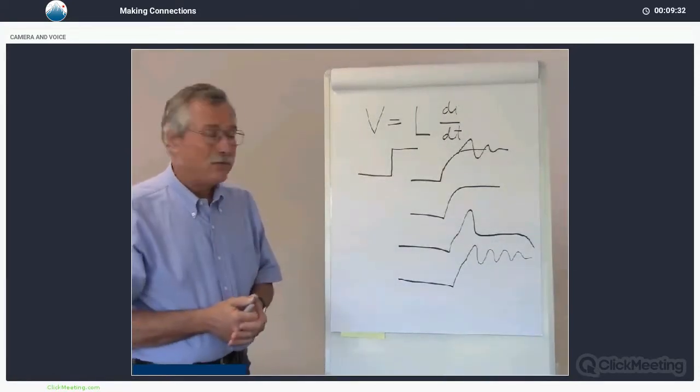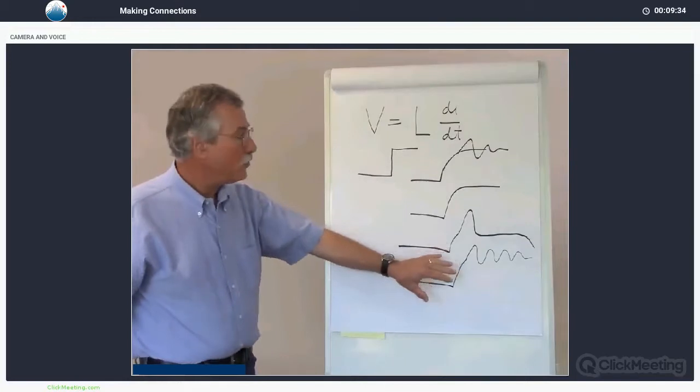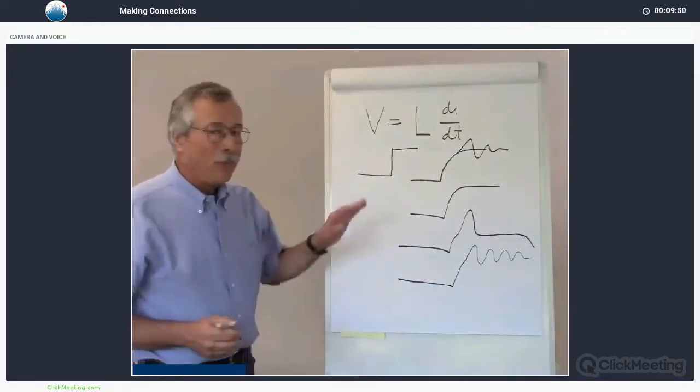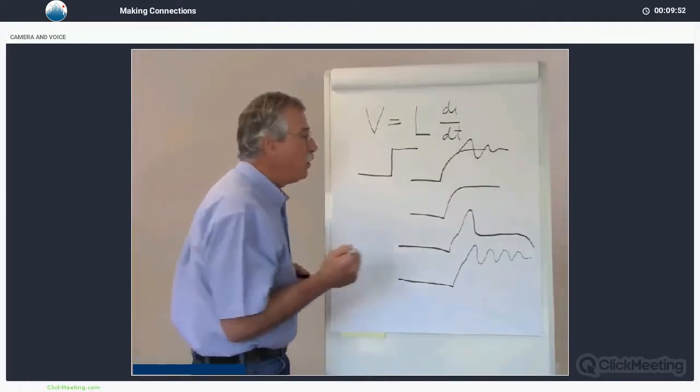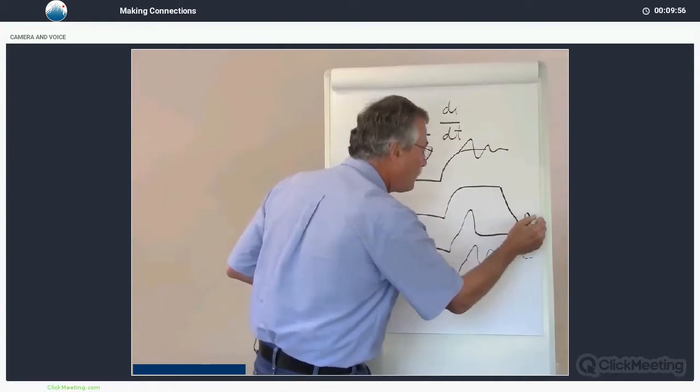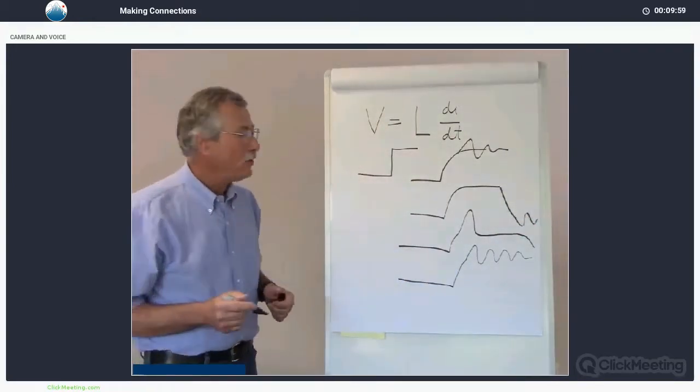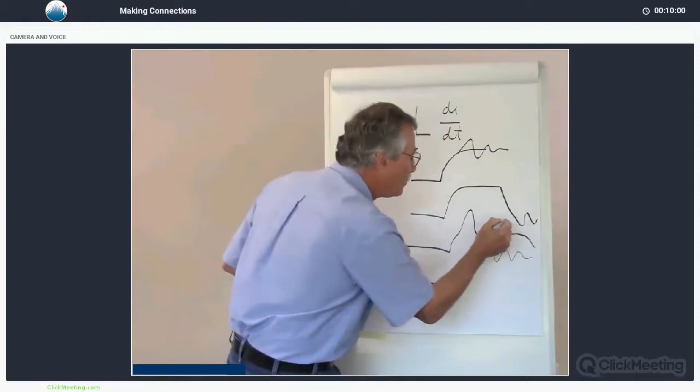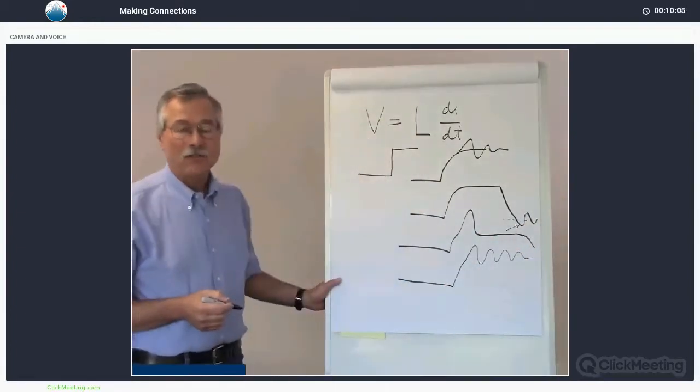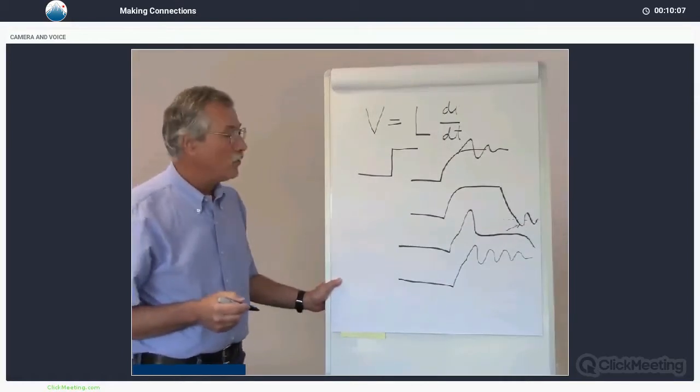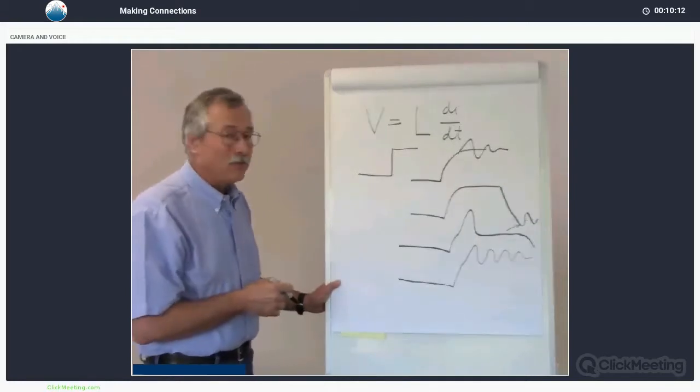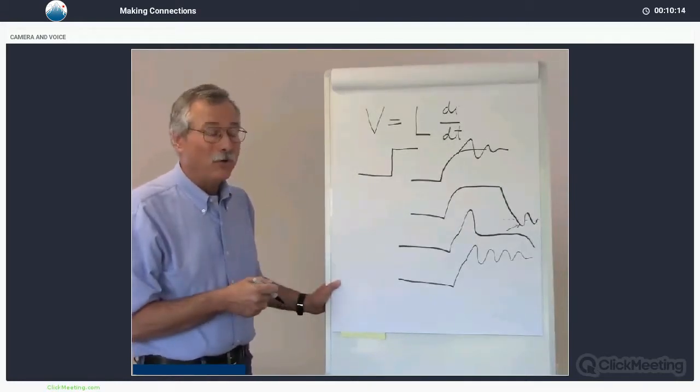A laser diode is a very fast device, and it will follow this current. So you will get this kind of light output, which of course is not what you want. Furthermore, at the end of the pulse, we can have another situation happening. We can have ringing at the end of the pulse, and this represents reverse bias on the laser diode, which can damage it. So inductance is not only inconvenient and gives us distorted pulses, it can damage either the laser diode or the pulser or both.